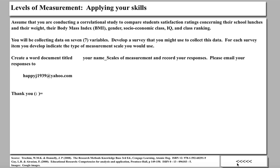Now let's apply your skills. Assume that you are conducting a correlational study to compare student satisfaction ratings concerning their school lunches, their weight, their body mass index, their gender, their socioeconomic class, their IQ, and their class rankings. You will be collecting data on seven variables. Develop a survey to collect this data, and for each survey item you develop, indicate the type of measurement scale you would use. Create a Word document titled Your Name Underscore Scales of Measurement, record your responses, and email it to happyj1939 at yahoo.com. Thank you very much — we'll see you next time.